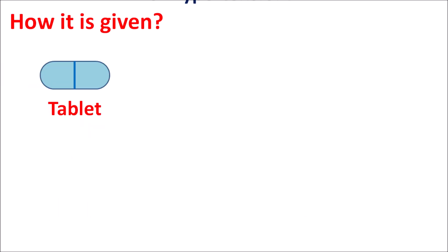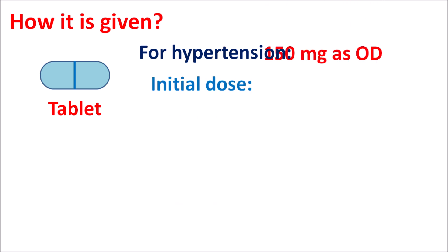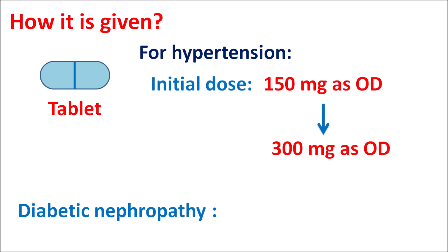This drug is available as a tablet for the treatment of hypertension. The initial dose of Irbesartan is 150 mg given once daily. Based on the efficacy of treatment, the dose can be increased up to 300 mg once daily. In patients with diabetic nephropathy, Irbesartan is given at a dose of 300 mg once daily.